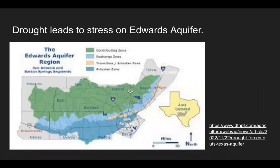This drought leads to stress on the Edwards Aquifer. This is important because the Edwards Aquifer is a primary source of drinking water for the population in Central Texas. The aquifer is currently at its lowest level since 2014, and has reduced its water supply by more than one-third because of drought conditions in Texas.